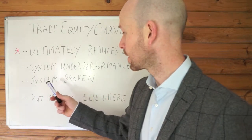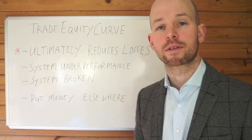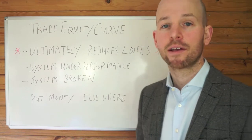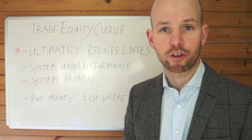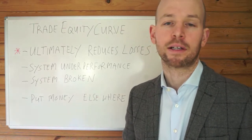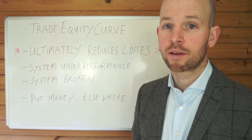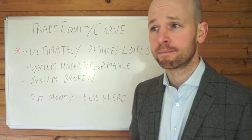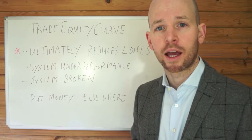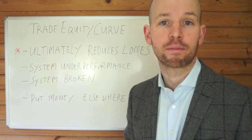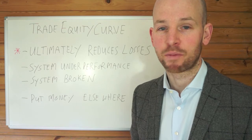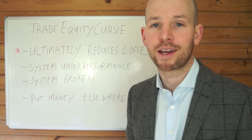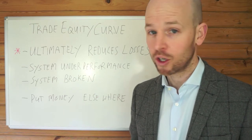Another main reason is it will tell you if a system is broken or has stopped working. A lot of systems might work for a couple of years really well, and then the edge just starts to go. They start to deteriorate and ultimately stop working. If you're trading your equity curve, you know when it started to deteriorate, and you're not going to keep losing money on a system that no longer has an edge.